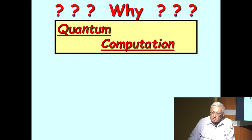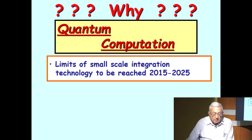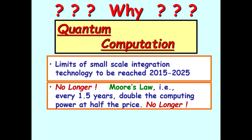Of course, the big question is, why bother? Quantum computation, basically, what's happening now is the limits of small-scale integration technology is to be reached sometime before 2025, if not sooner. This means many things. It means that no longer will Moore's Law mean that every 1.5 years, we'll double the computing power at half the price.